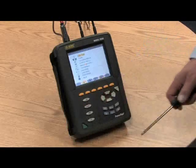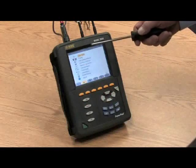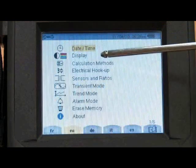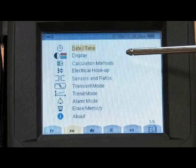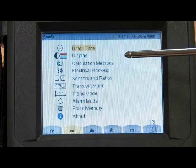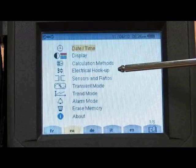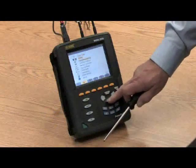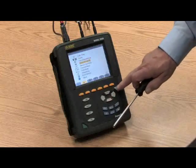There is a setup button. In the setup function, we can pick and set the time and date. We can set the contrast and the clarity of the display. We can set the configuration mode. For example, if I scroll down to electrical hookup, press the enter key.